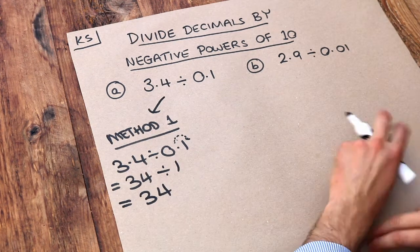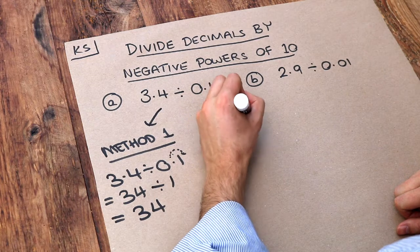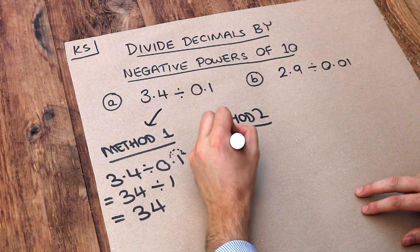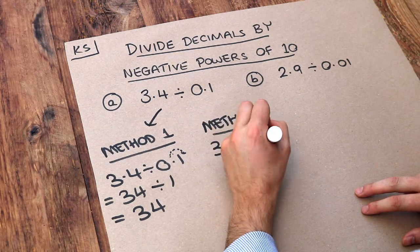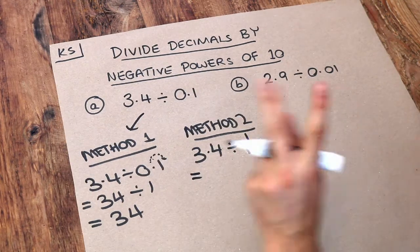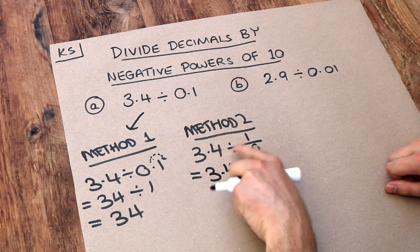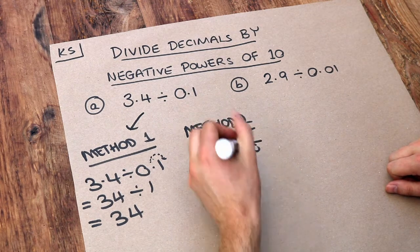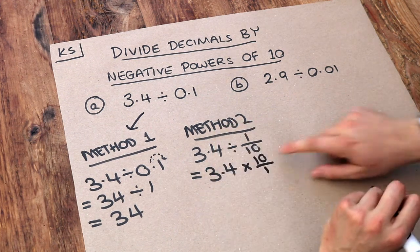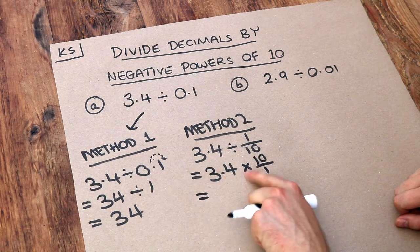So that's one way of doing it. Or method two is to replace the 0.1 with a fraction. Well, 0.1 as a fraction is a tenth. Now do you remember when we divide by fractions, we can use the keep flip change method. So we keep this number as it is, we change the divide into a times, and we flip this second fraction.